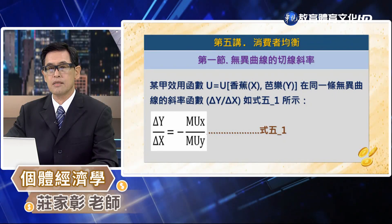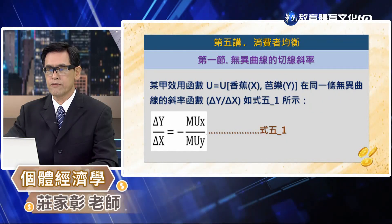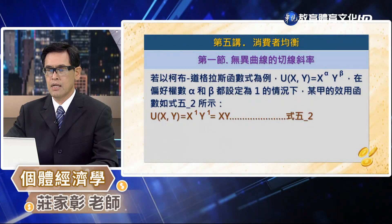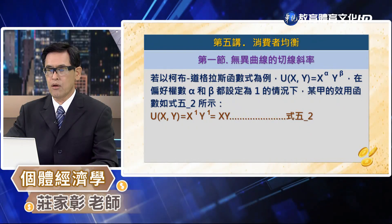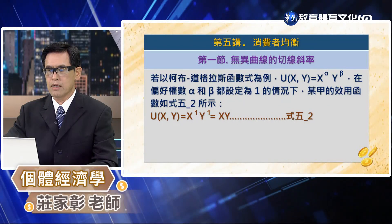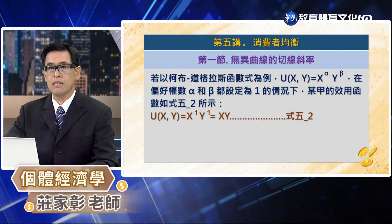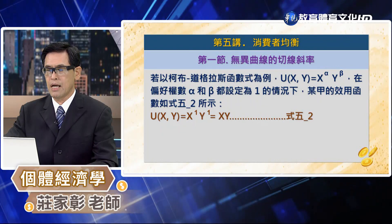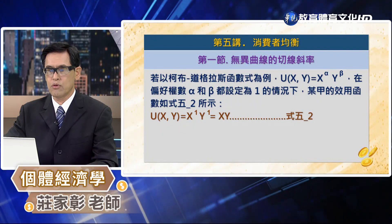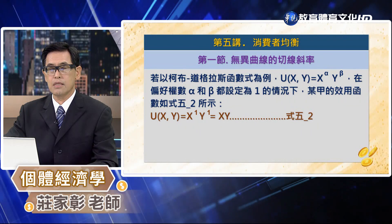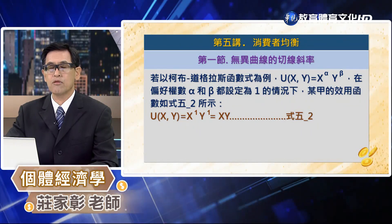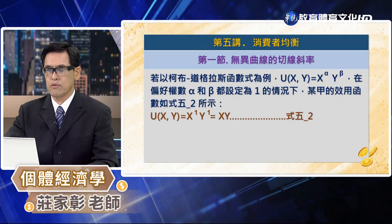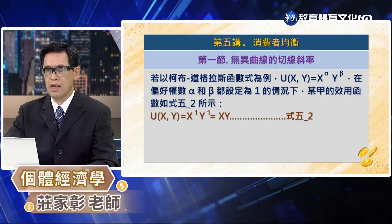由於這兩種商品我們都假設它是喜好品，所以邊際效用都是一個正數，它的比值當然也是正數，但是因為無異曲線是負斜率，所以要加一個負號。在這裡我們假設一個 Cobb-Douglas 的效用函數：x 的 α 次方乘以 y 的 β 次方，這個 α 跟 β 都是偏好參數，為了簡化起見我們把 α 跟 β 都設定為 1。